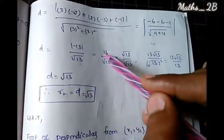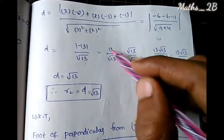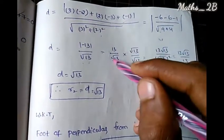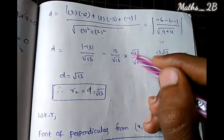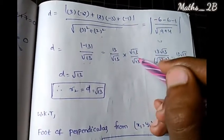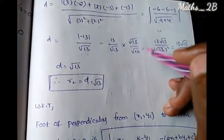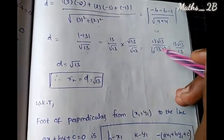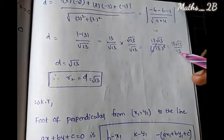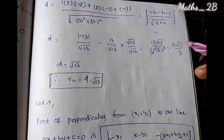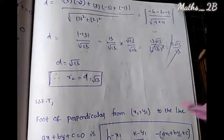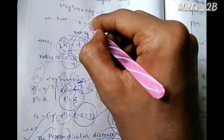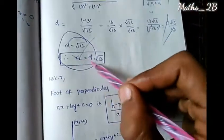Multiplying numerator and denominator by root of 13: 13 times root 13 divided by root 13 times root 13 equals 13 root 13 divided by 13 equals root 13. Therefore D equals square root of 13, which equals r2. The condition r2 equals D is satisfied.